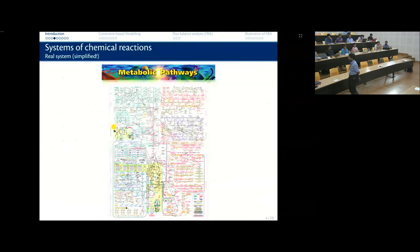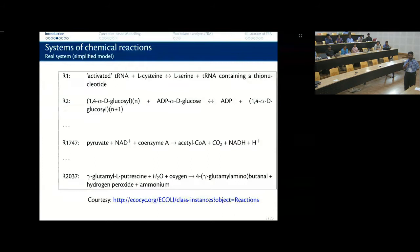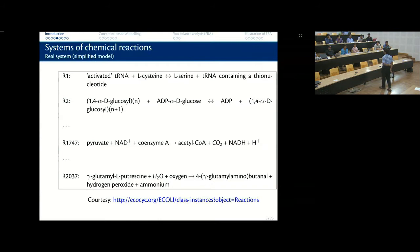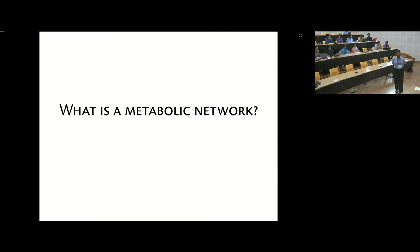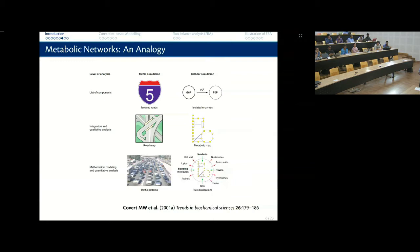If you simplify the real system, it essentially comes down to a long list of reactions. You have the TCA cycle and a long bunch of reactions. To model E. coli metabolically is to represent it as a long list of about 2000 reactions. A nice analogy from a 2001 paper: it's similar to a road network, where isolated roads are like a single reaction, a road map is like a metabolic map, and traffic patterns are like flux distributions.